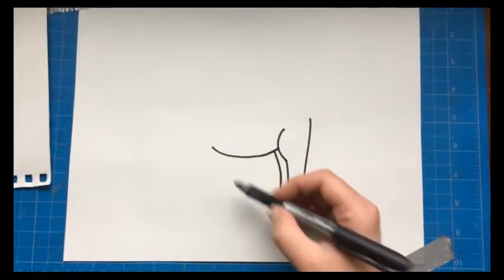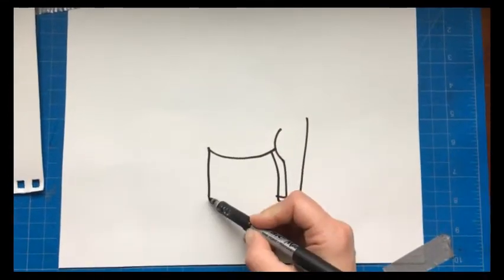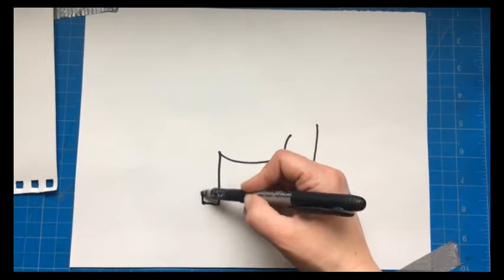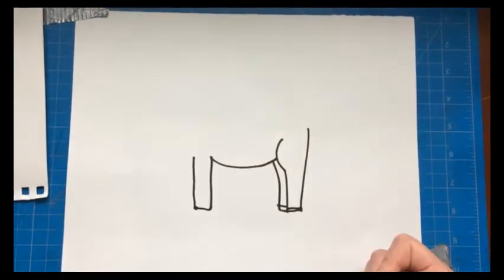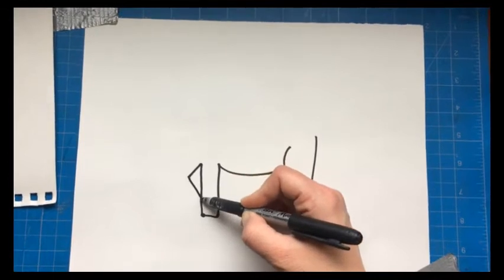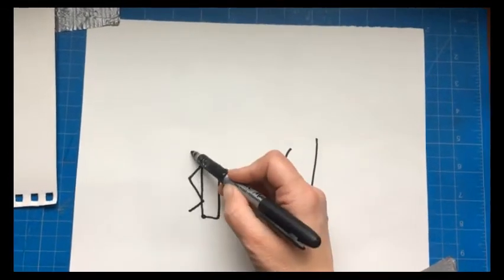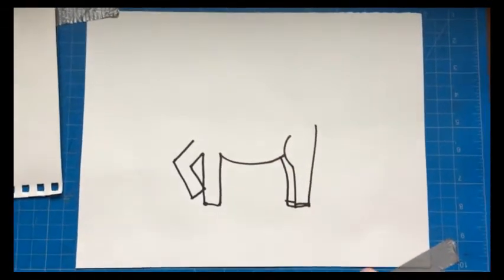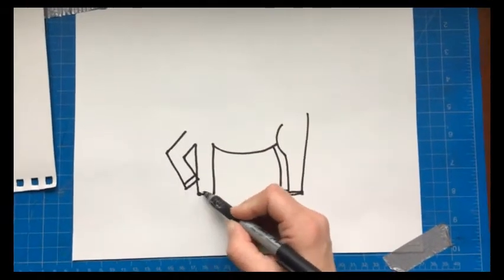Now we'll do the front leg. Just goes down, over and back up. There we go. Now the next leg will be bent. So we're gonna do a little diagonal there and then go across. And then we're just gonna do the same exact thing to make it look thick. And now we'll add the hoof lines again. Just two horizontal lines.